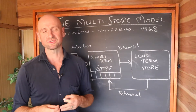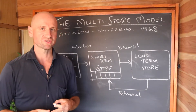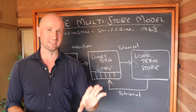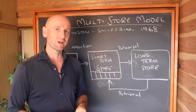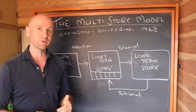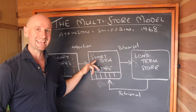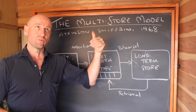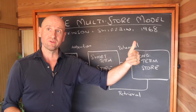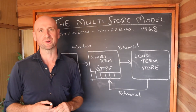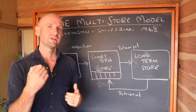Another reason the multi-store model is so popular is that it sparked a whole new generation of psychologists to study these specific processes in more detail. For example, the working memory model by Baddeley and Hitch is an elaboration of the short-term store. Robert Shiffrin went on to develop new models of memory — the SAM model, the Search of Associative Memory, and later the REM model, the Retrieving Effectively from Memory model. So this model sparked future research into memory processes.